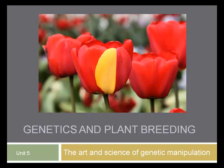Hello, Jeff Weiss back to talk about genetics and plant breeding, the art and science of genetic manipulation. This is unit five and the photograph here is of a chimera. It's a genetic mutation on the petal of a tulip. Mutations are a form of genetic alteration and have been used extensively in tulip production over the years to generate and preserve some of the amazing number of varieties of tulips. We're going to be talking about other types of genetic characteristics and how they're used in producing horticultural plants.